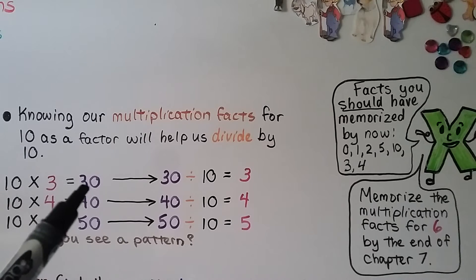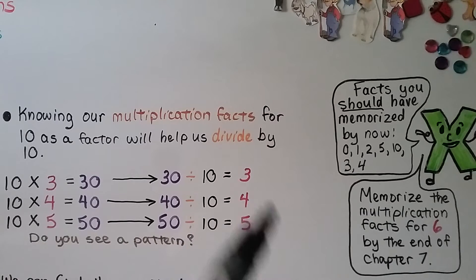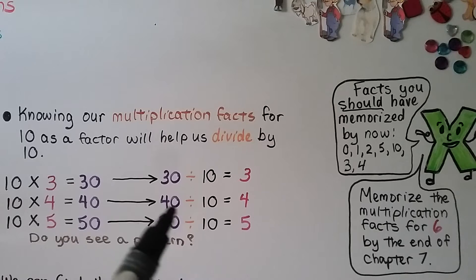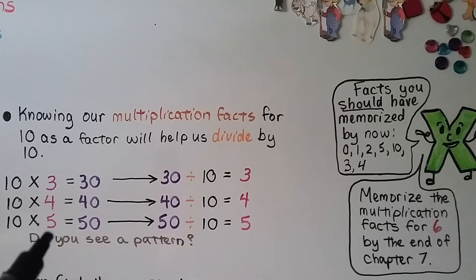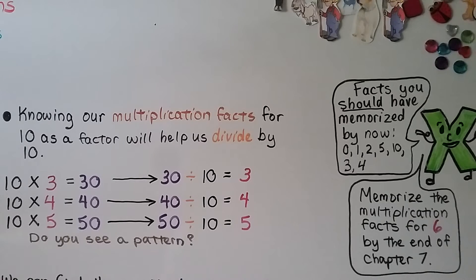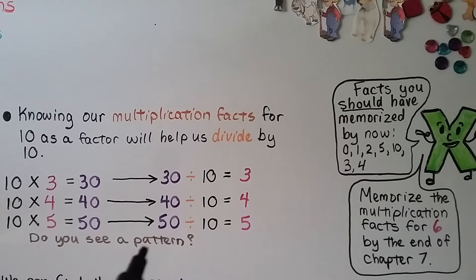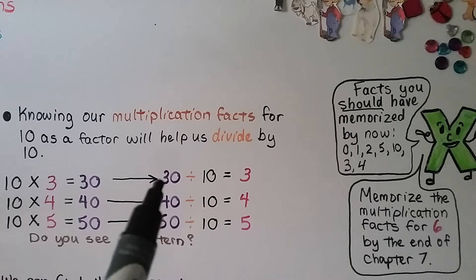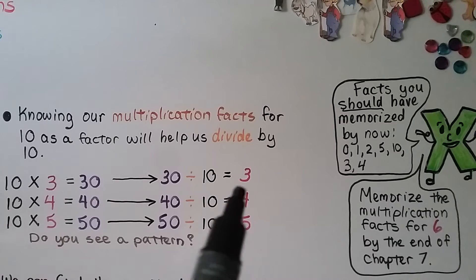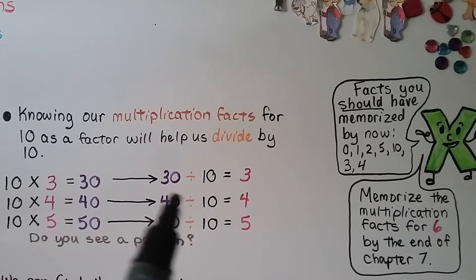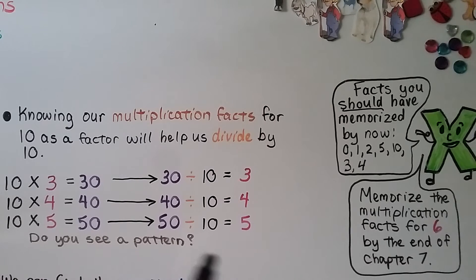10 times 3 is 30, so 30 divided by 10 is 3. 10 times 4 is 40, so 40 divided by 10 is 4. 10 times 5 is 50, so 50 divided by 10 is 5. Do you see a pattern? The product is the dividend, and the other factor becomes the quotient. Also notice: 3 is just 30 missing its zero in the ones place, and the same for 4 and 40, and 5 and 50. Dividing by 10, we can just take the zero off!